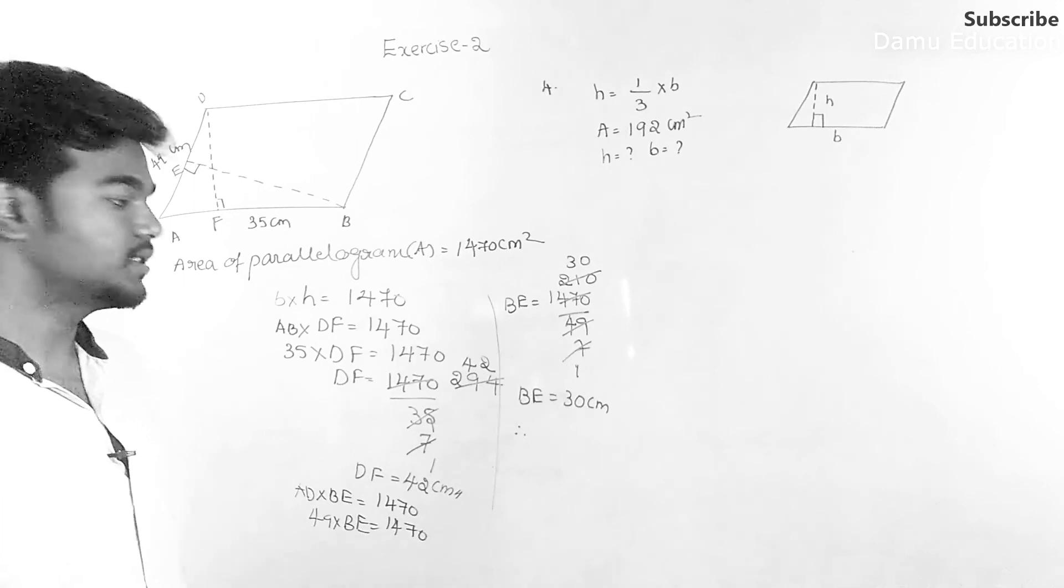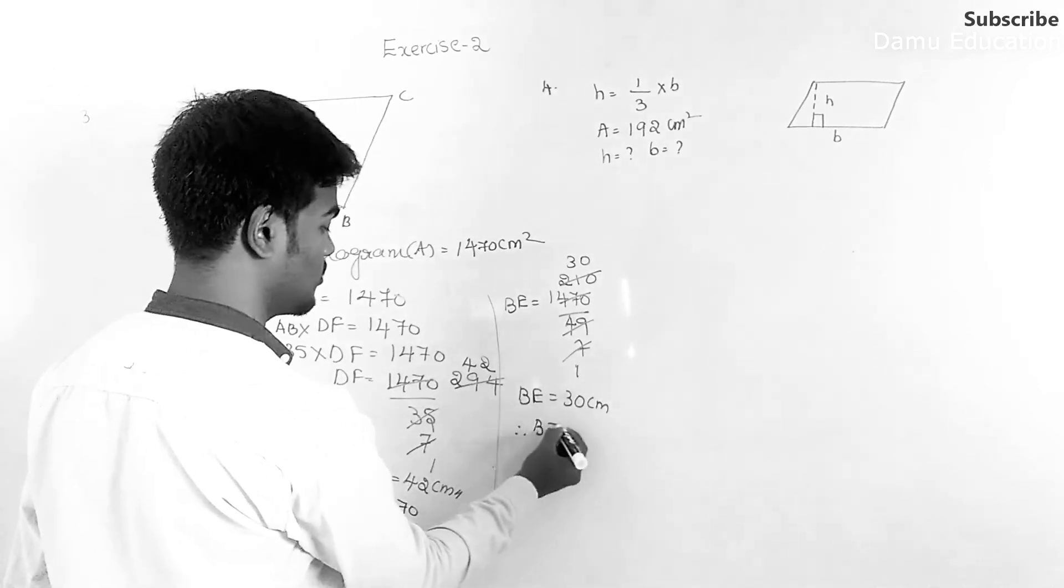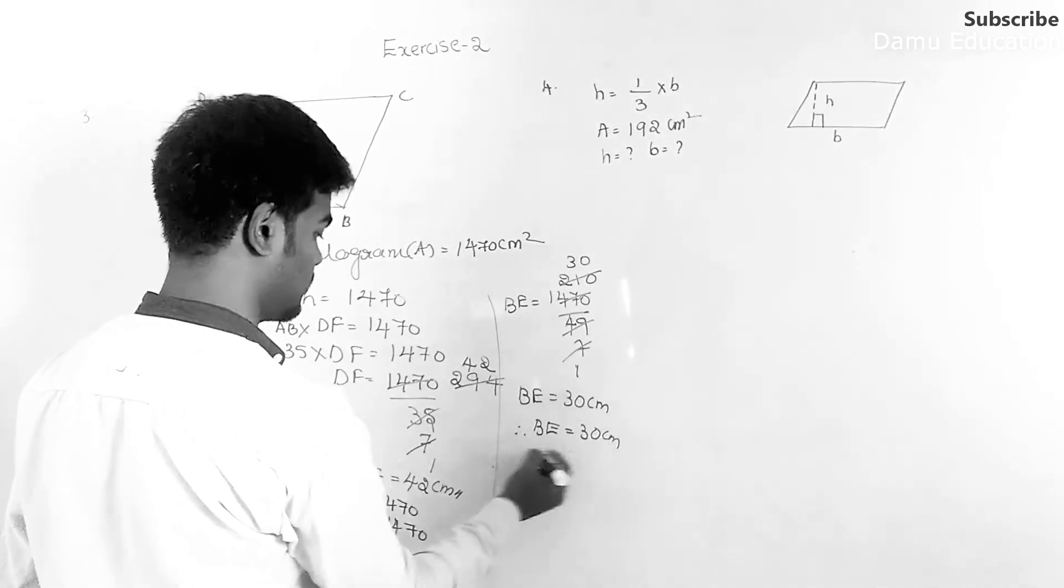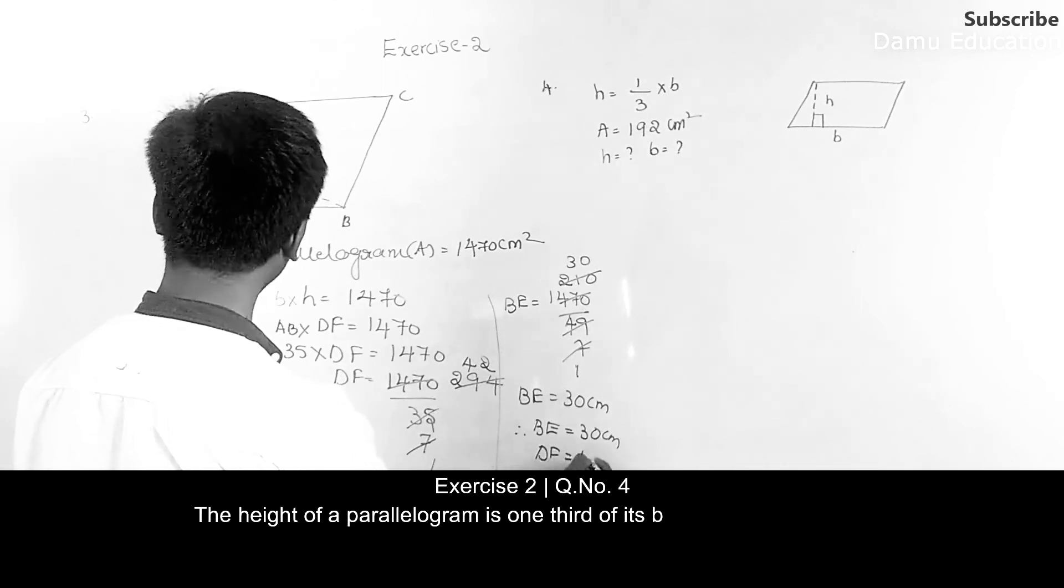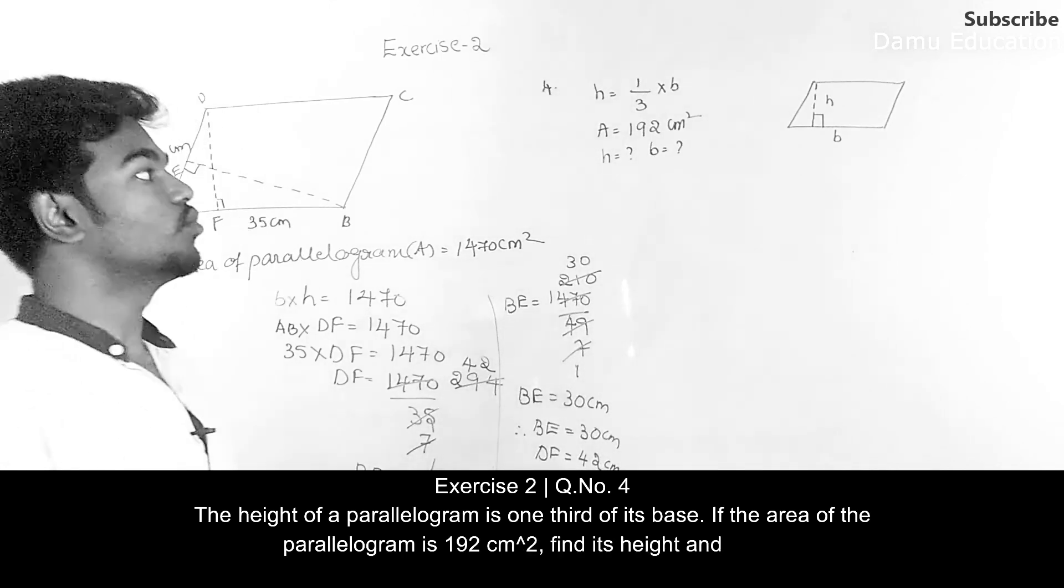Therefore, what are the measurements of heights? BE equal to 30 centimeters, then DF will be equal to 42 centimeters.